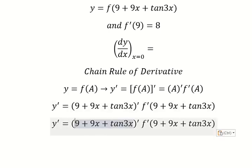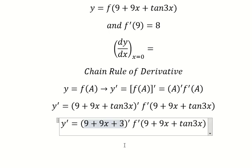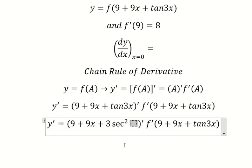So the first derivative of 9, that is a constant, so you get 0. This one we have 1. This one we have 3 sec²(3x) as well.